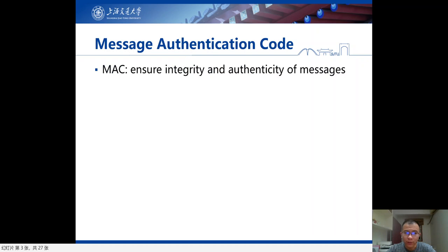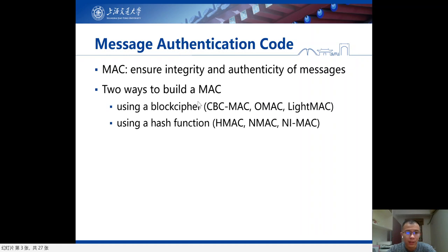Message authentication code is one of the symmetric key primitives to provide integrity and authenticity of messages. A sender and a receiver will firstly share a secret key and then use this algorithm to authenticate messages. There are two ways to build the MAC: one is using a block cipher, with known examples including CBC-MAC and lightweight MAC; the second one is using a hash function, with known examples including HMAC, NMAC.